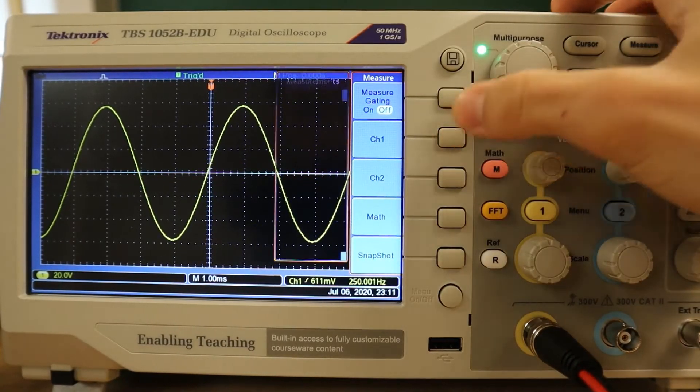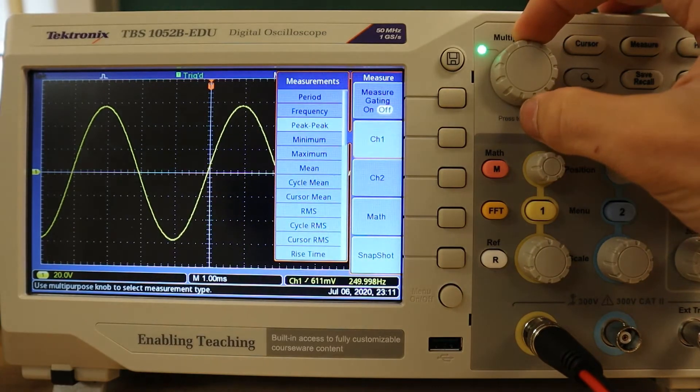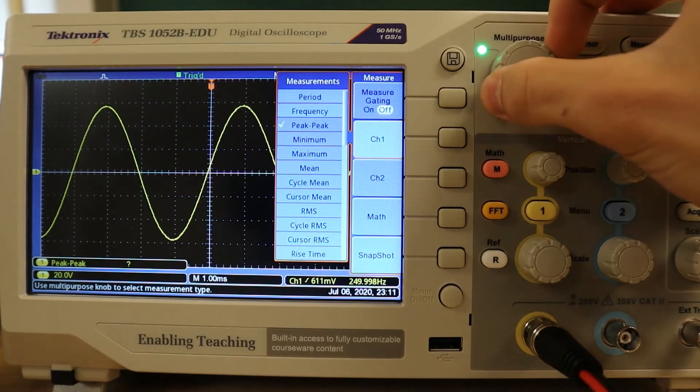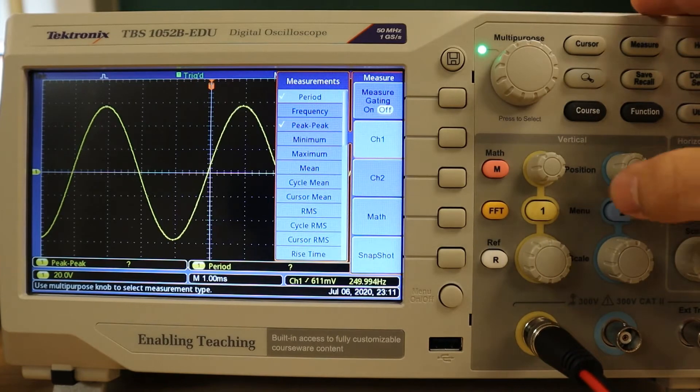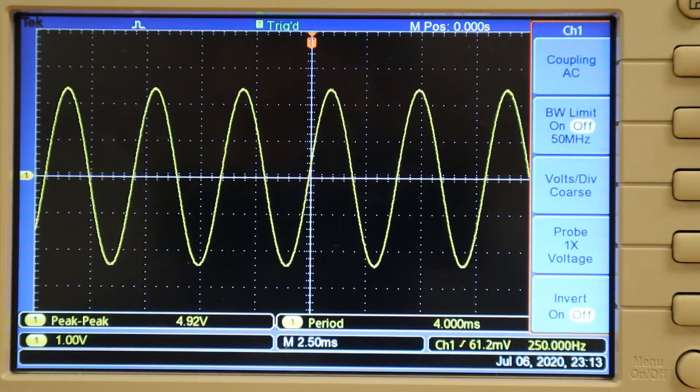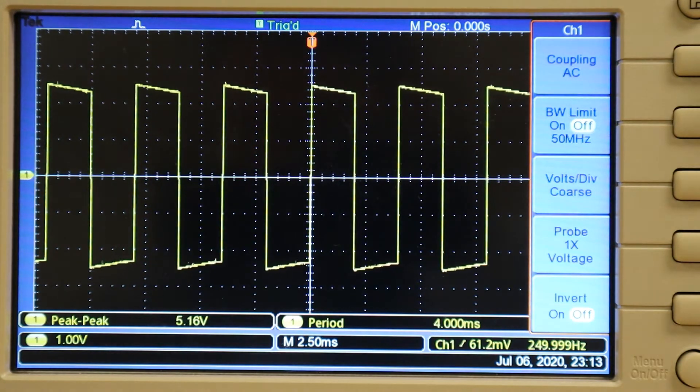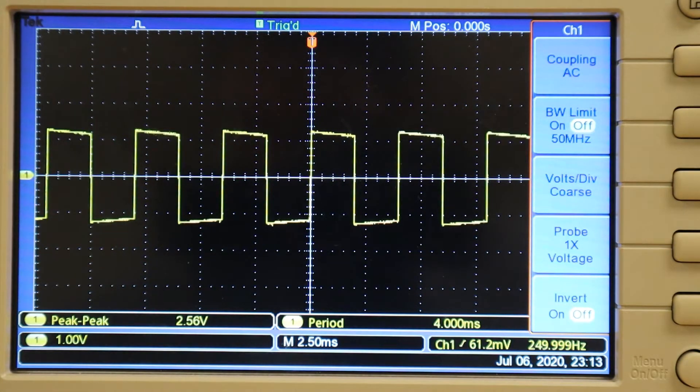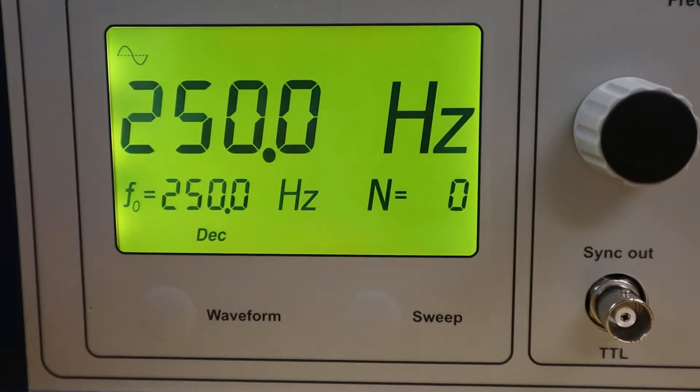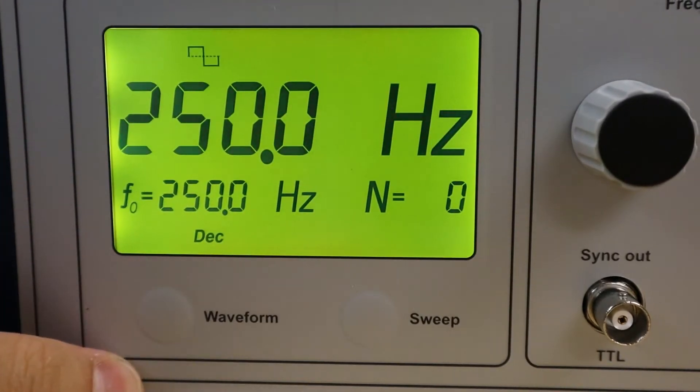Remember that by using automated measuring utilities, we can determine valuable information such as the peak-to-peak voltage or the period of the waveform. Notice also that these values may or may not change depending on the type of waveform we use. The amplitude and type of waveform can be adjusted on the function generator.